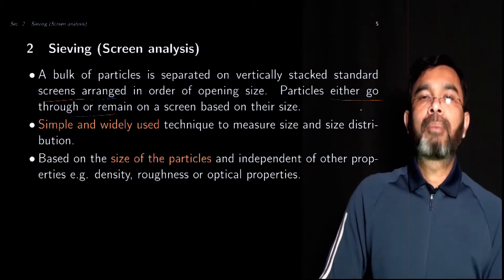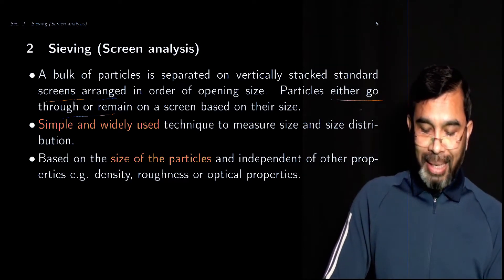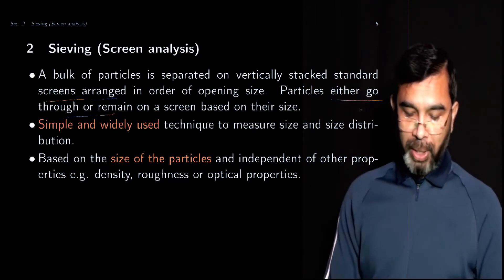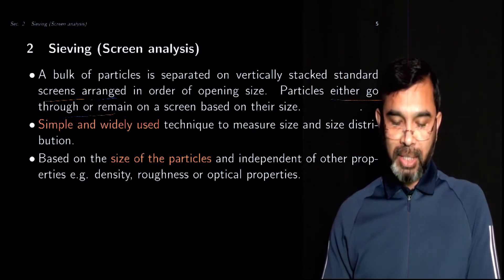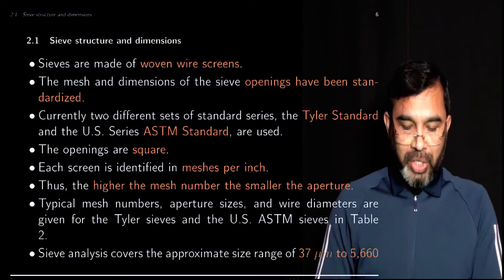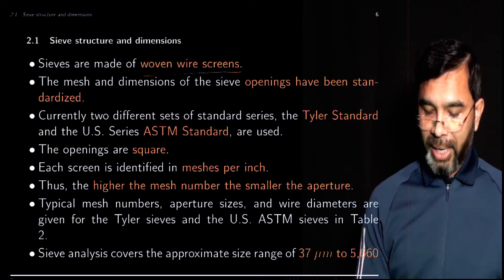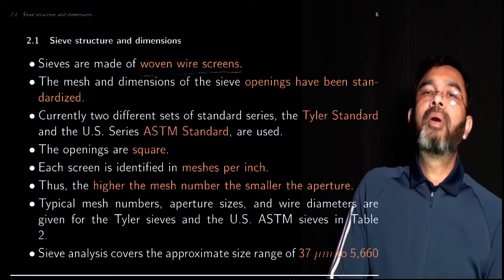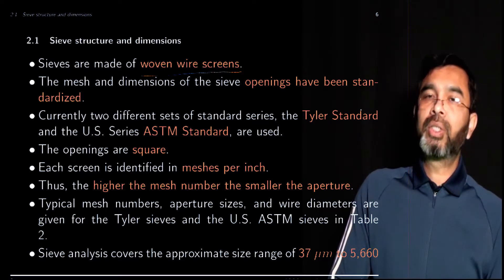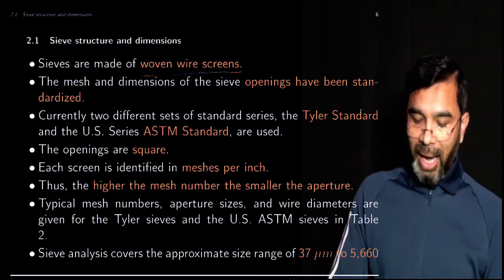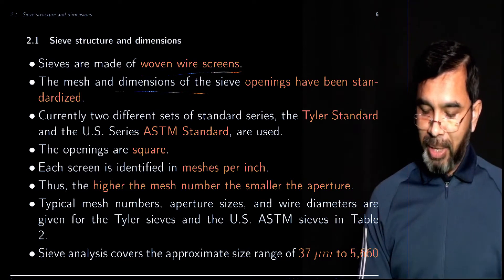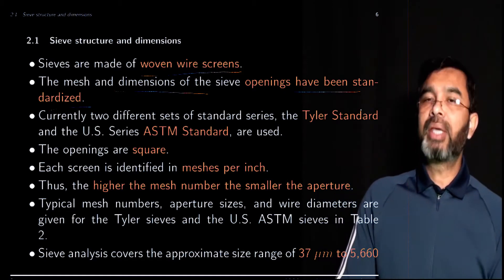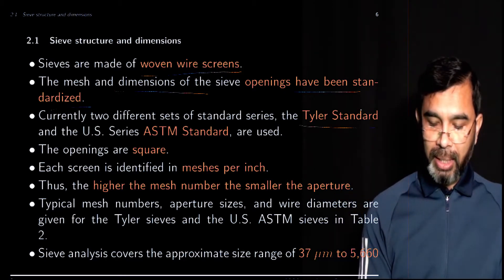It is simple, widely used, and independent of other properties — meaning it is independent of particle density, roughness, or any other optical properties. It depends only on the size of the particles. Regular sieves are made of open wire screens. To make sure that everyone uses the same dimensions when describing particle size, these screens have been standardized.